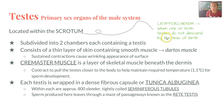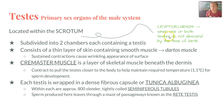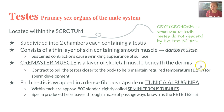There is a condition called cryptorchidism, which is when one or both of the testes do not descend by the time of birth. This usually resolves later or can be fixed through surgery, which is usually not a big issue.